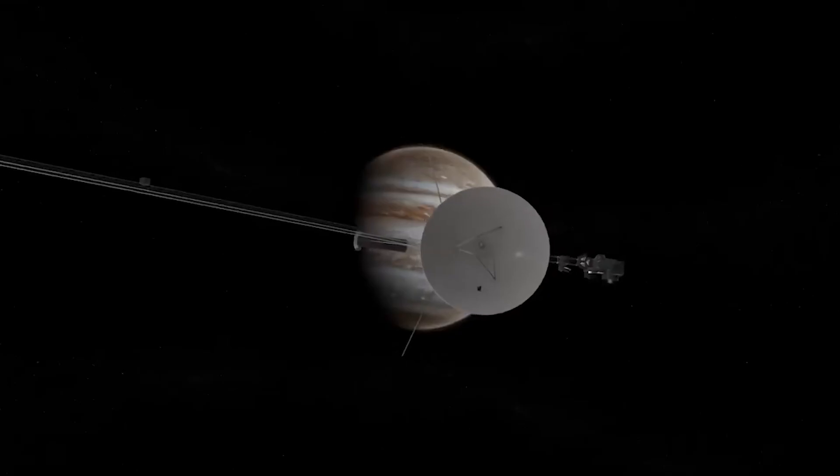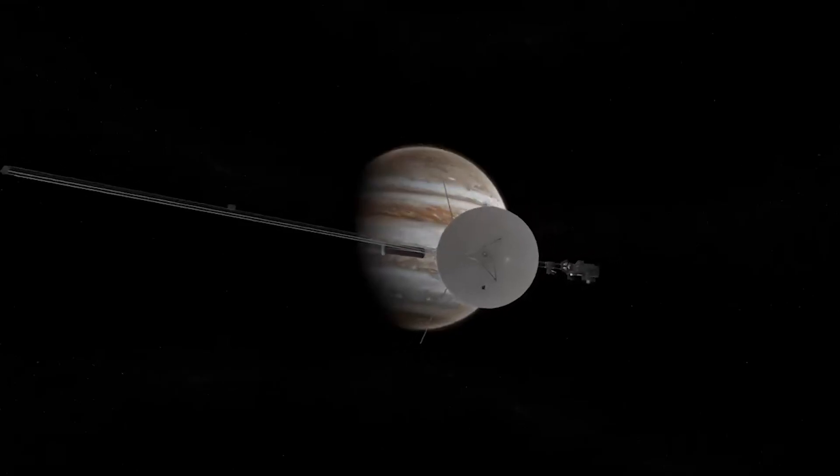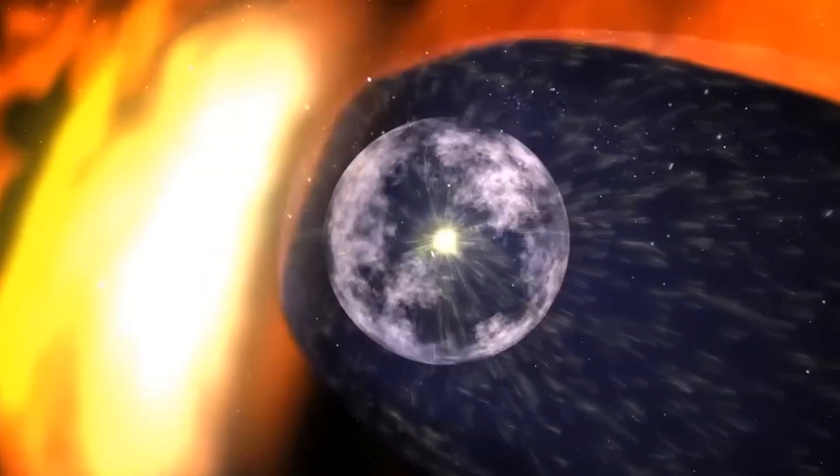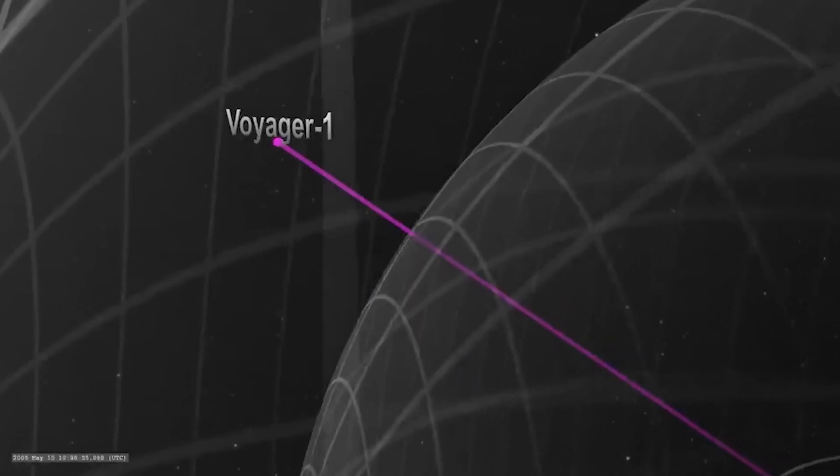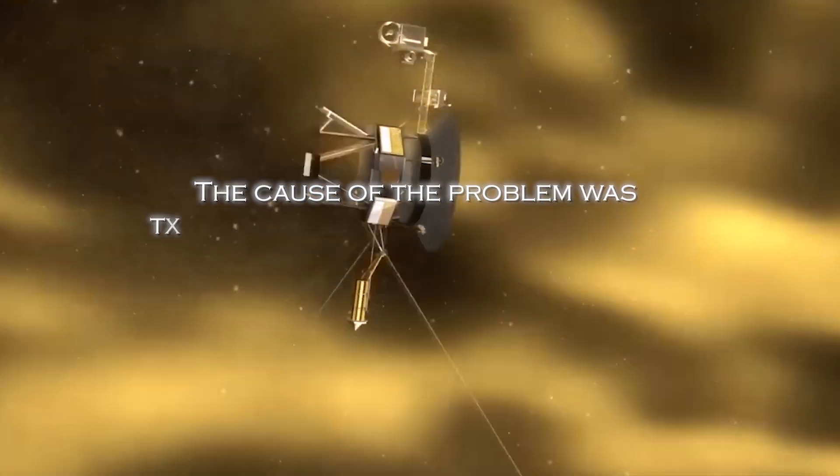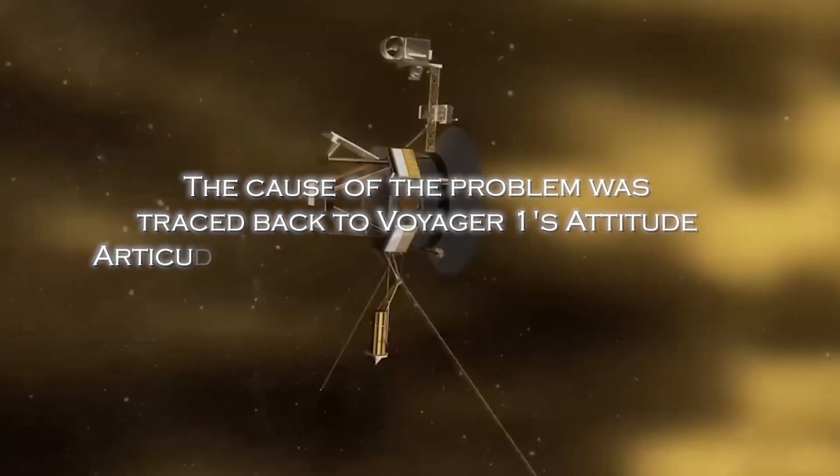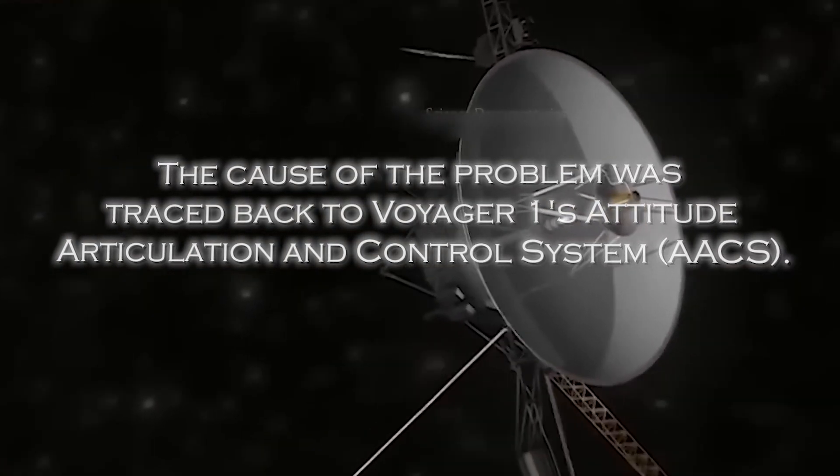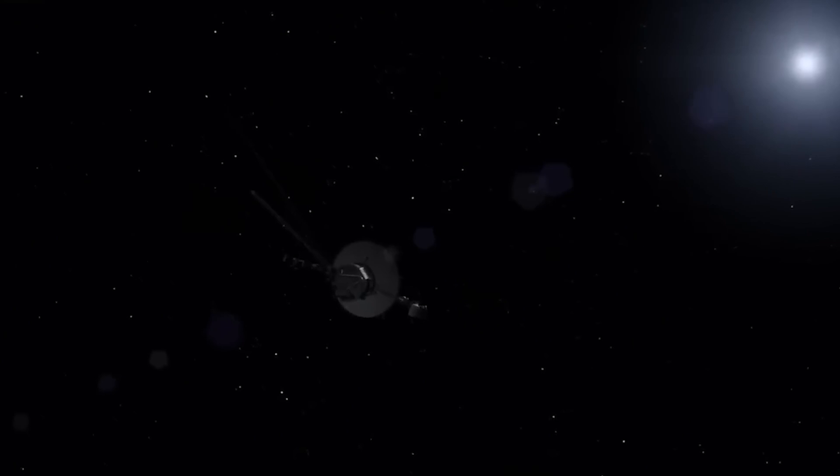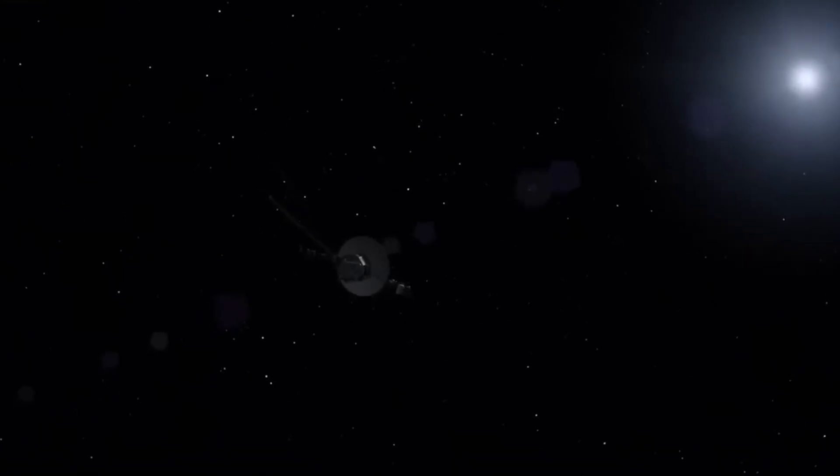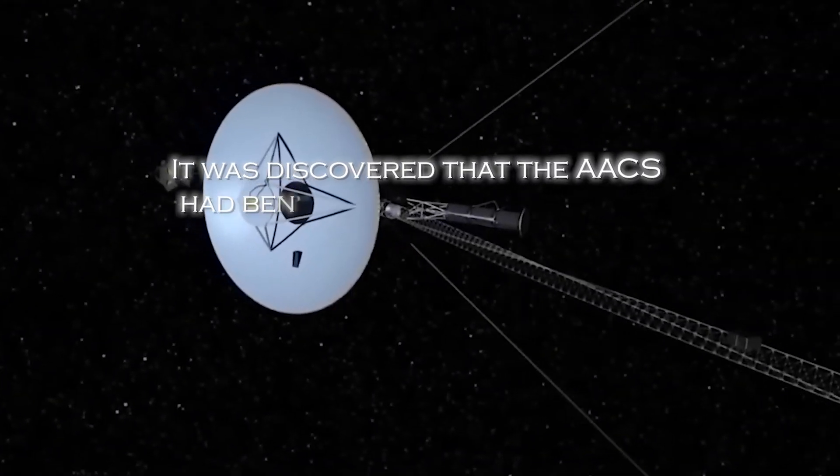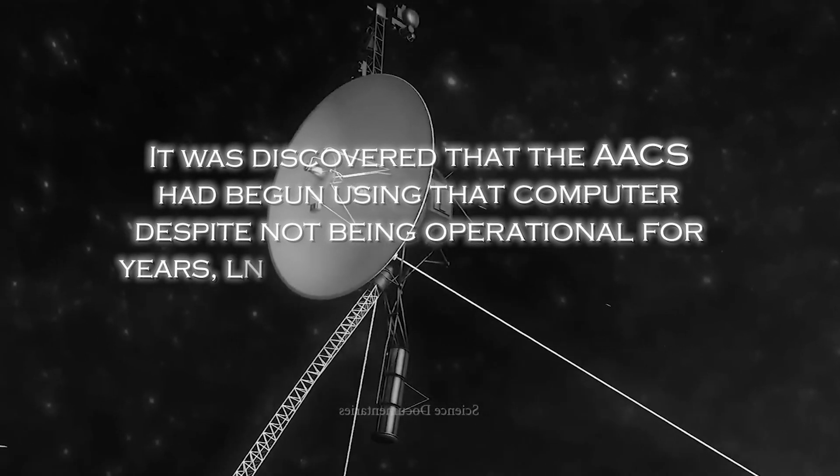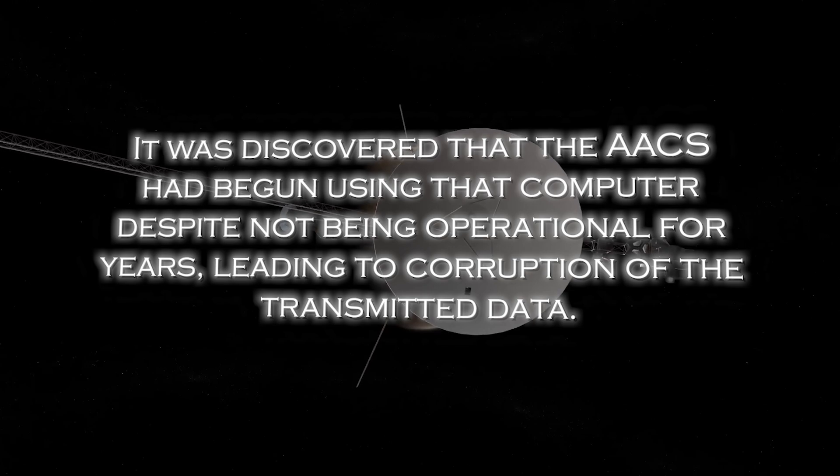After months of receiving encrypted data from the spacecraft, scientists and engineers were finally able to restore clarity and reliability to the information coming from the far reaches of interstellar space. The cause of the problem was traced back to Voyager 1's Attitude Articulation and Control System, or AACS, especially an on-board computer that was supposed to be inactive. Surprisingly, it was discovered that the AACS had begun using the computer despite not being operational for years, leading to corruption of the transmitted data.